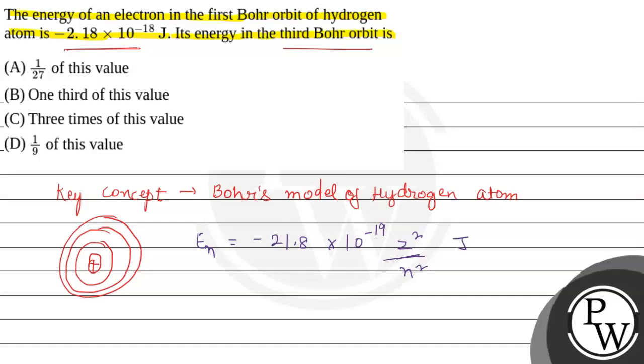For one atom, the energy is given by this formula, where Z represents the atomic number and n represents which orbit the electron is in - the number of the orbit.